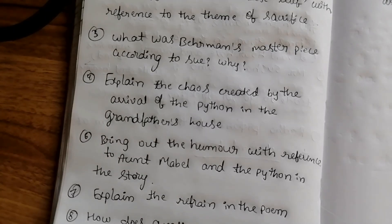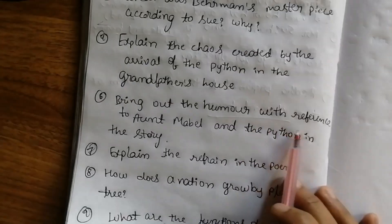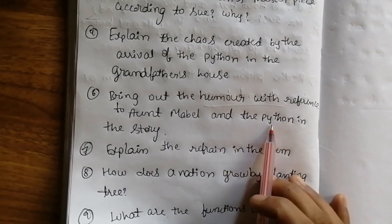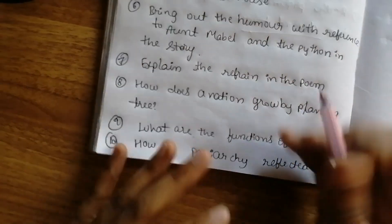You can write all these answers easily. Next question: Bring out the humor with reference to Aunt Mabel and the python in the story. Explain the refrain in the poem 'The Heart of a Tree.'